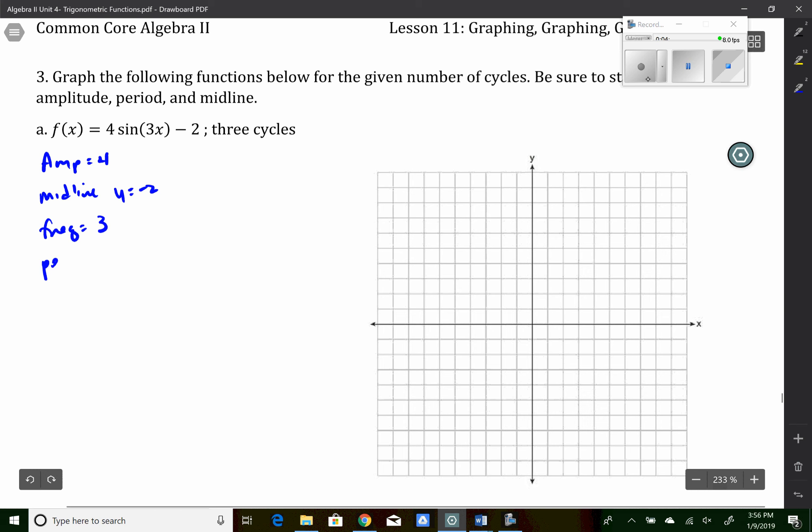Therefore, the period is going to be period times 3 equals 2 pi divided by 3. So the period is 2 pi over 3. So when I start to scale this out, I'm going to go out four boxes and put a 2 pi over 3.